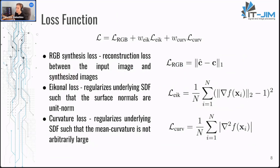The RGB loss is only one of three components of the complete loss function. The other two are the Eikonal loss and the curvature loss. Eikonal loss comes from a special property of SDF: the derivative of the SDF value is a surface normal with unit length, and by using this loss we enforce the neural representation to be a valid signed distance function. The curvature loss is used to encourage smoothness of the reconstructed surfaces.